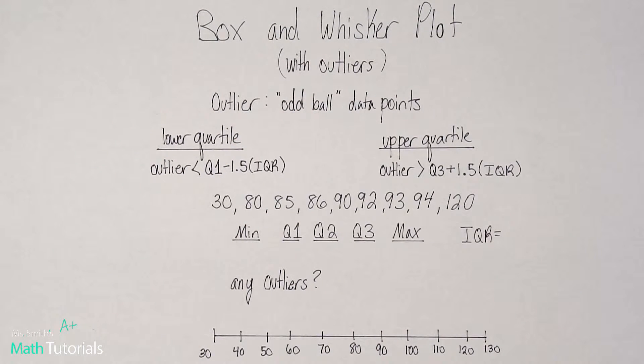In the last video, I talked about just building box and whisker plots in general. In this video, I'm going to show you how to do it with outliers, and then I'm also going to show you how we can use the calculator to do a box and whisker plot to really help us. In the last video, we did it all by hand. In this video, I'm going to show you a different way to do it just towards the end there.